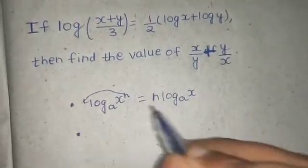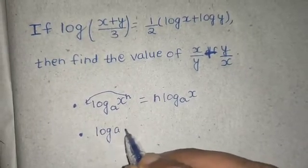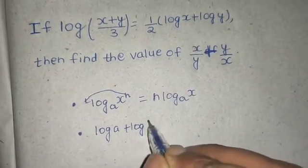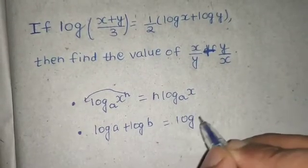The second one is log of a plus log of b. Provided both the log base is same, it becomes log of ab.